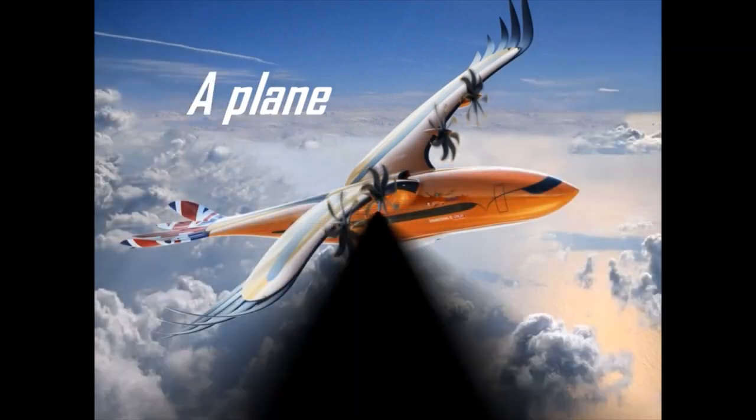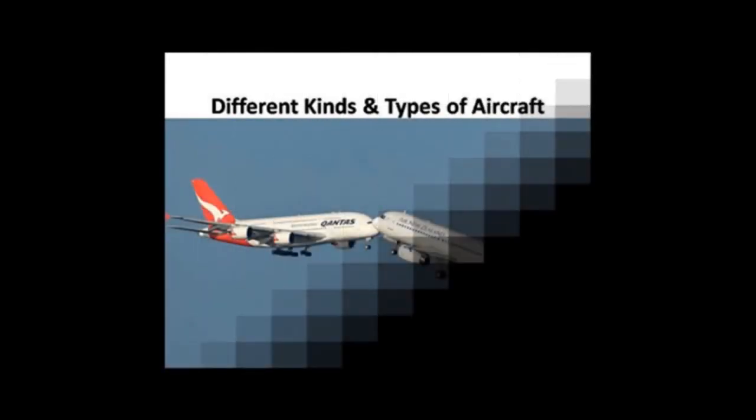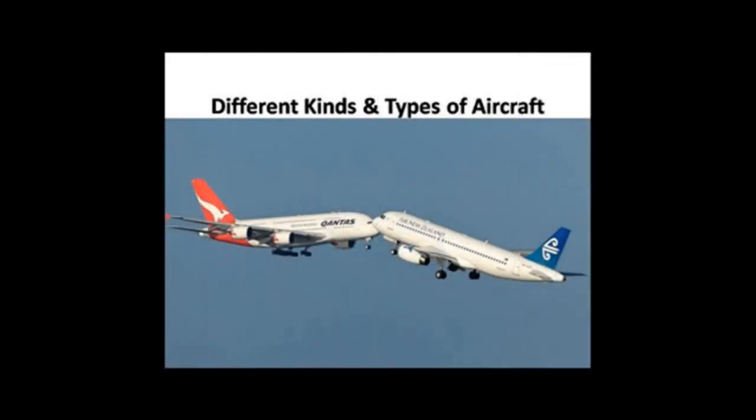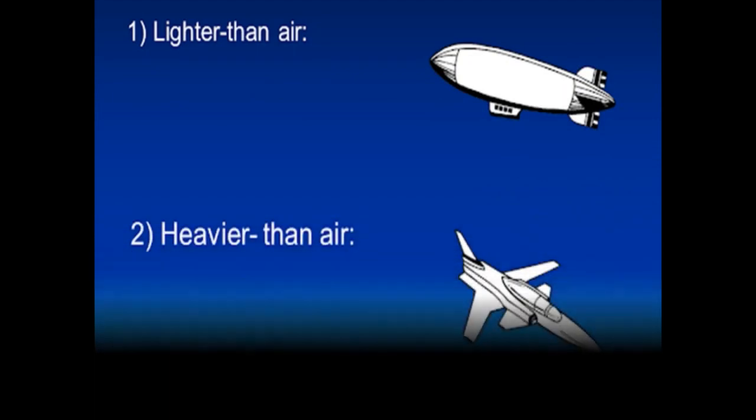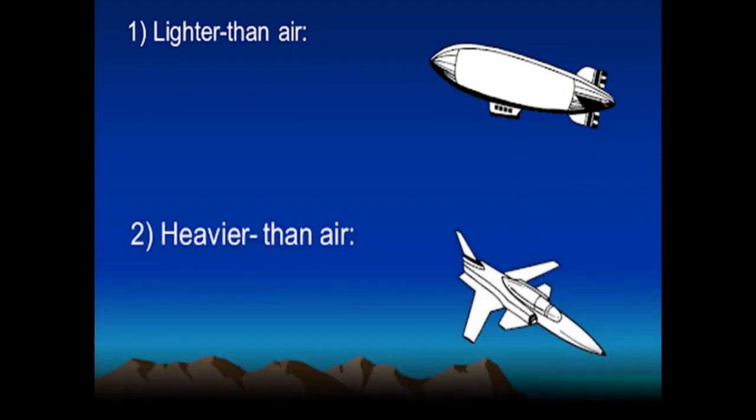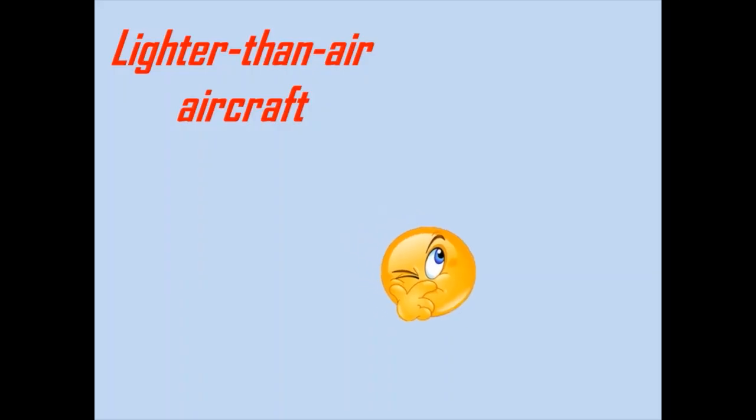For example, a plane or helicopter. Now I'm going to discuss about different kinds and types of aircraft. Primarily, aircraft are divided into two types: lighter-than-air aircraft and heavier-than-air aircraft.